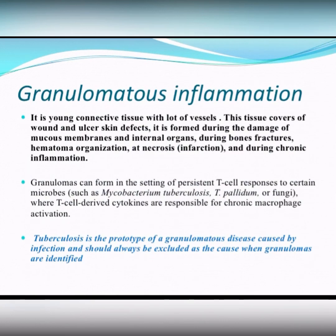What means granulomatous inflammation? It is young connective tissue with a lot of vessels. This tissue covers wounds and ulcer skin defects. It is formed during the damage of mucous membranes and internal organs, during bone fractures, hematoma organization, fat necrosis, and during chronic inflammation.